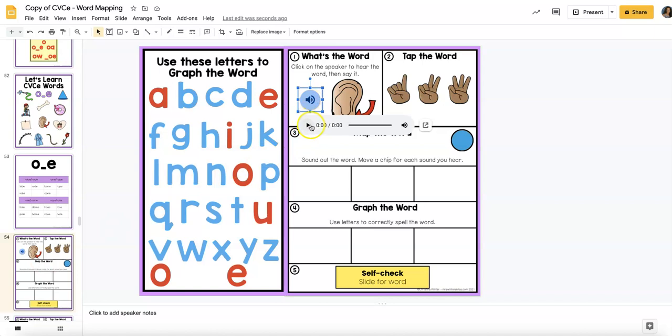Students are going to click the button to hear the word. Lobe. Lobe. So they'll make an association with the picture and hear the word. Then they're going to say the word.